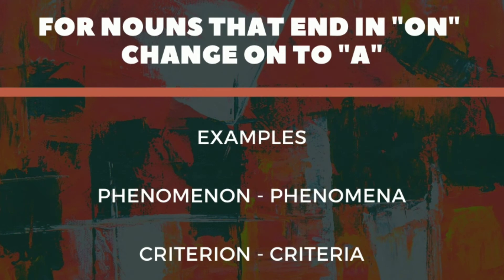For nouns ending in ON, we change ON to A. For example, phenomenon — P-H-E-N-O-M-E-N-O-N — becomes phenomena — P-H-E-N-O-M-E-N-A. Criterion — C-R-I-T-E-R-I-O-N — becomes criteria — C-R-I-T-E-R-I-A. We cancel the ON and add A.